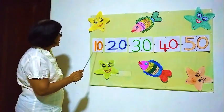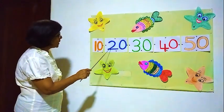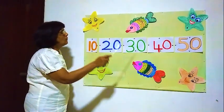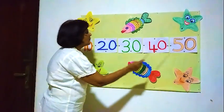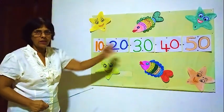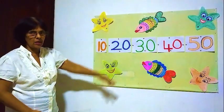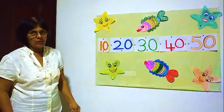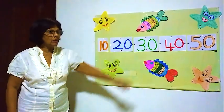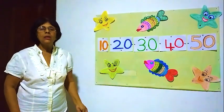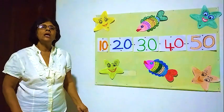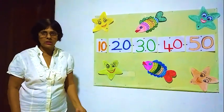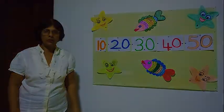Now here: 10, 20, 30, 40, 50. This is 10s. Okay children, thank you for listening. After 50, when we learn the other numbers, we will do the other 10s. Thank you very much.